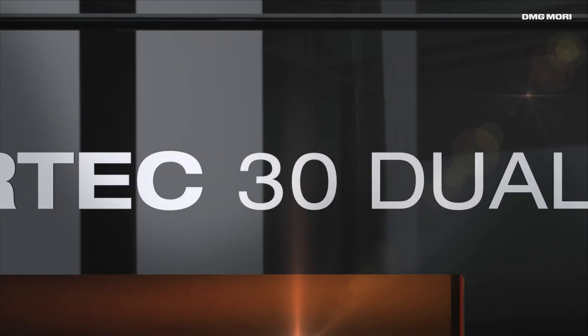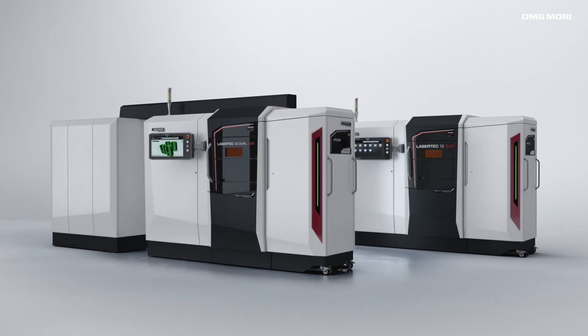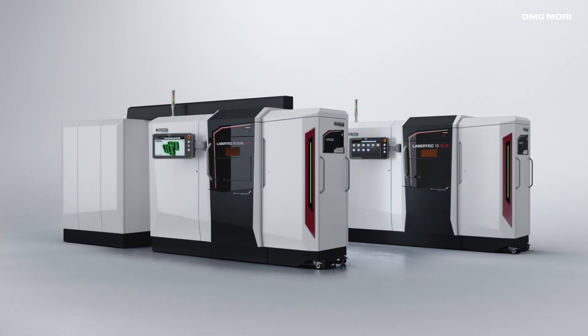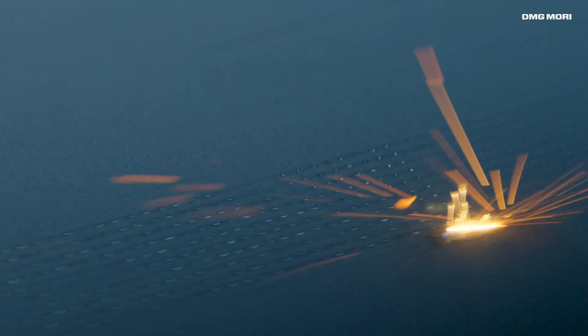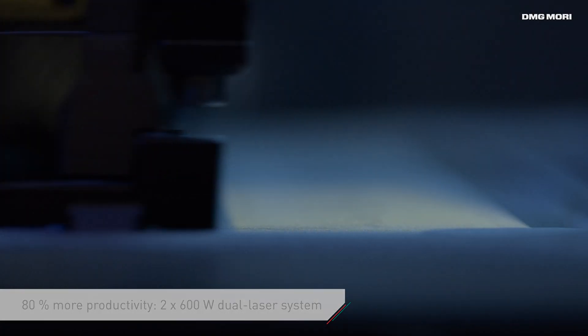DMG Mori Lasertek SLM Machines stand for high precision selective laser melting with a powder bed process. The new Lasertek 30 Dual SLM offers two powerful 600 watt lasers with up to 80% higher productivity.